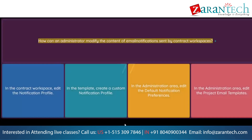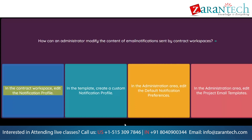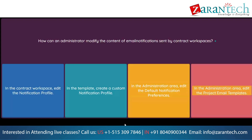Question: How can an administrator modify the content of email notifications sent by contract workspaces? Option 1: In the contract workspace, edit the notification profile. Option 2: In the template, create a custom notification profile. Option 3: In the administration area, edit the default notification preferences. Option 4: In the administration area, edit the project email templates.